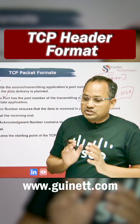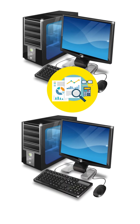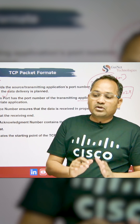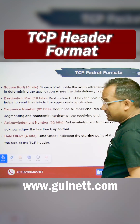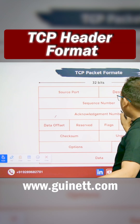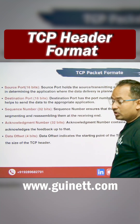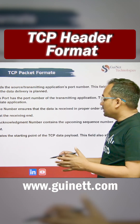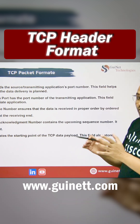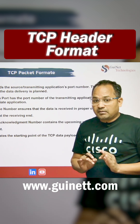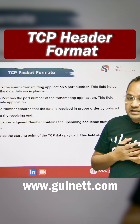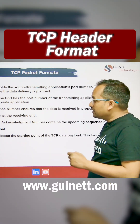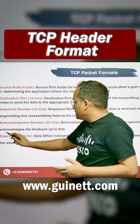The sequence number is going to ensure that whatever data the sender sent to the receiver is received in the proper order — that is its responsibility. The acknowledgement number is 32 bits and plays a very vital role. The acknowledgement number contains the next sequence number expected, meaning once you receive the data you give the acknowledgement for the next expected step.